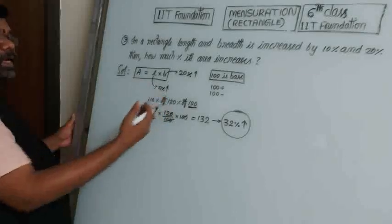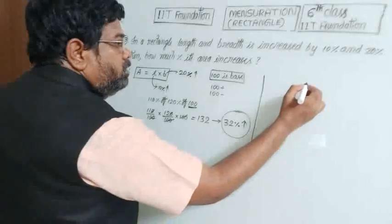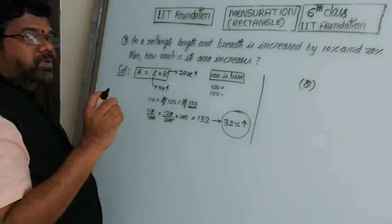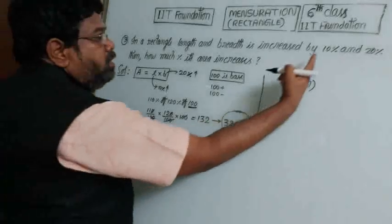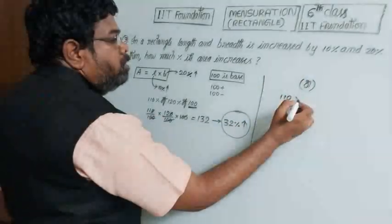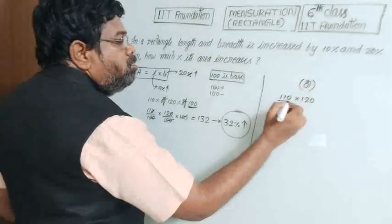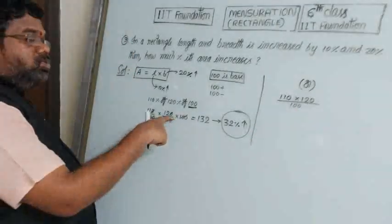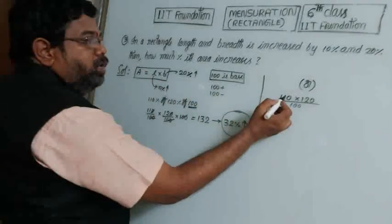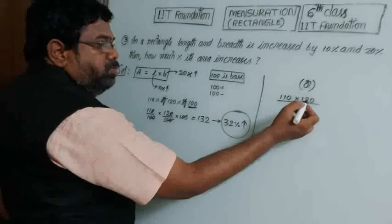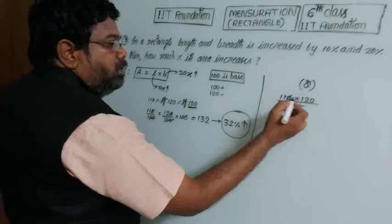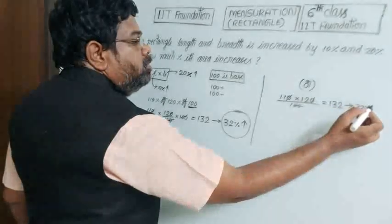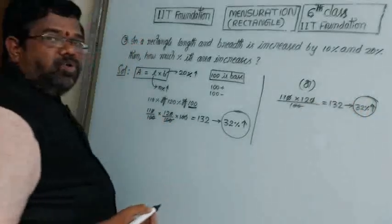The shortcut: area is always in square units, so multiply both dimensions. Take 110 into 120 divided by 100. Zeros cancel giving 11 into 12 equals 132. Greater than 100 by 32, so the area increases by 32%.